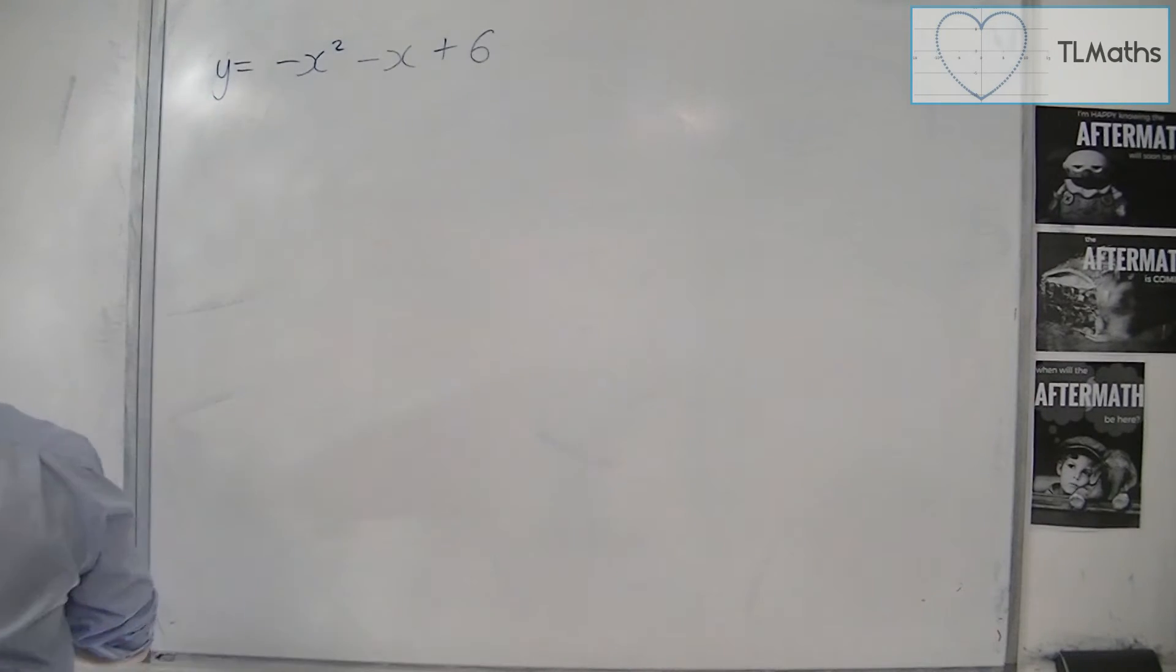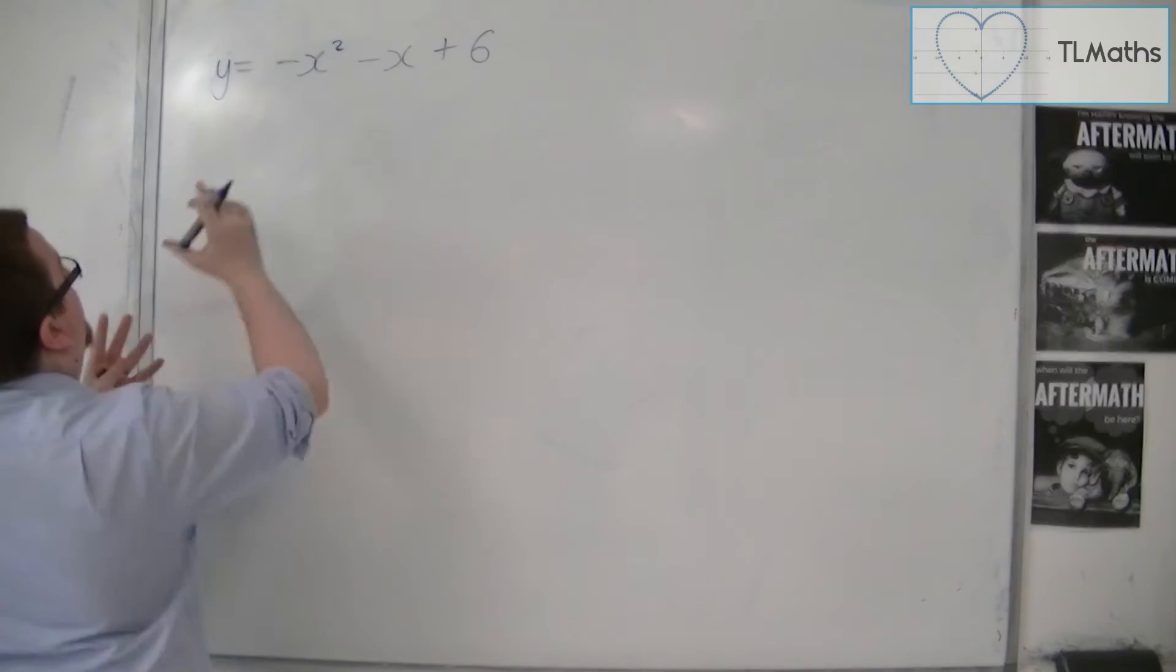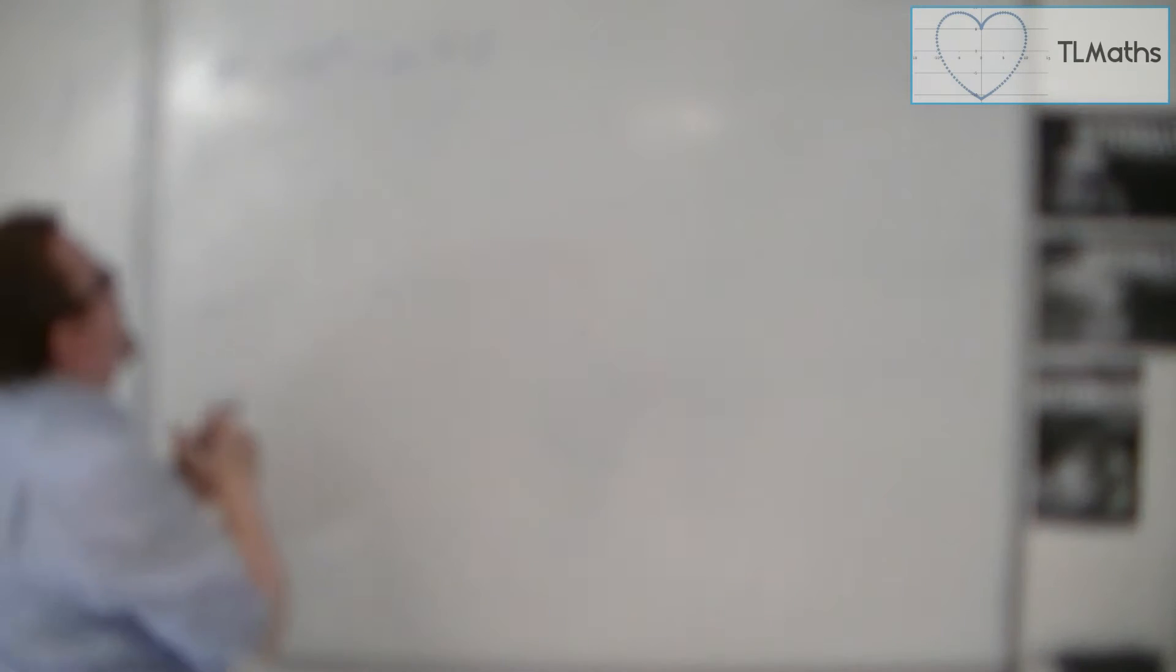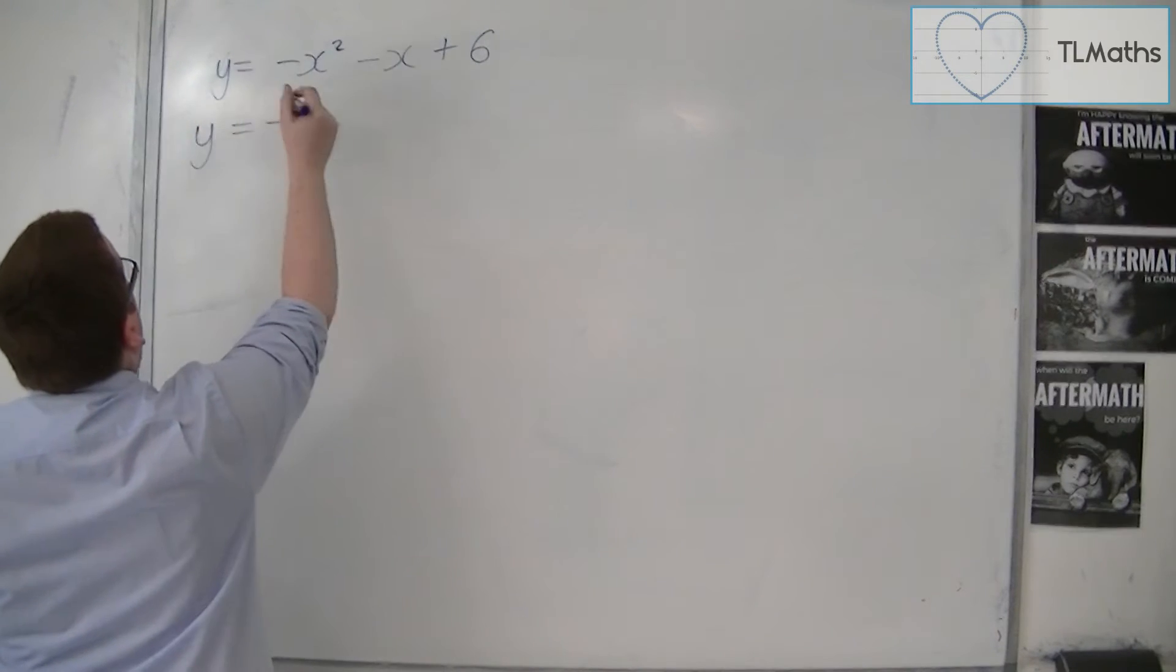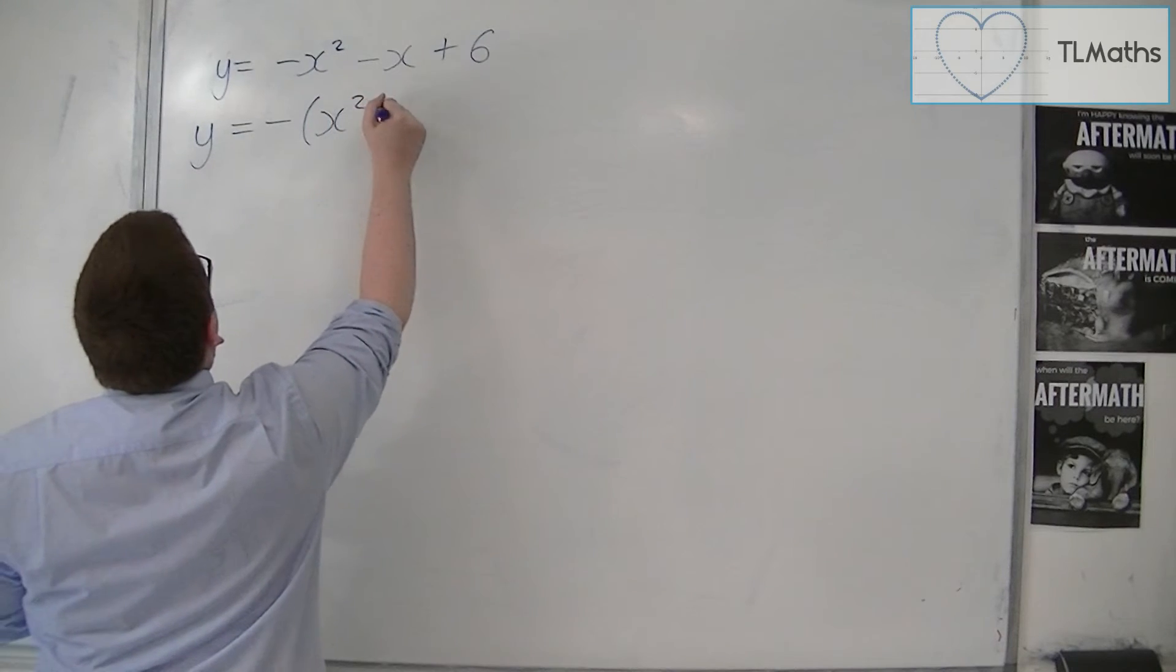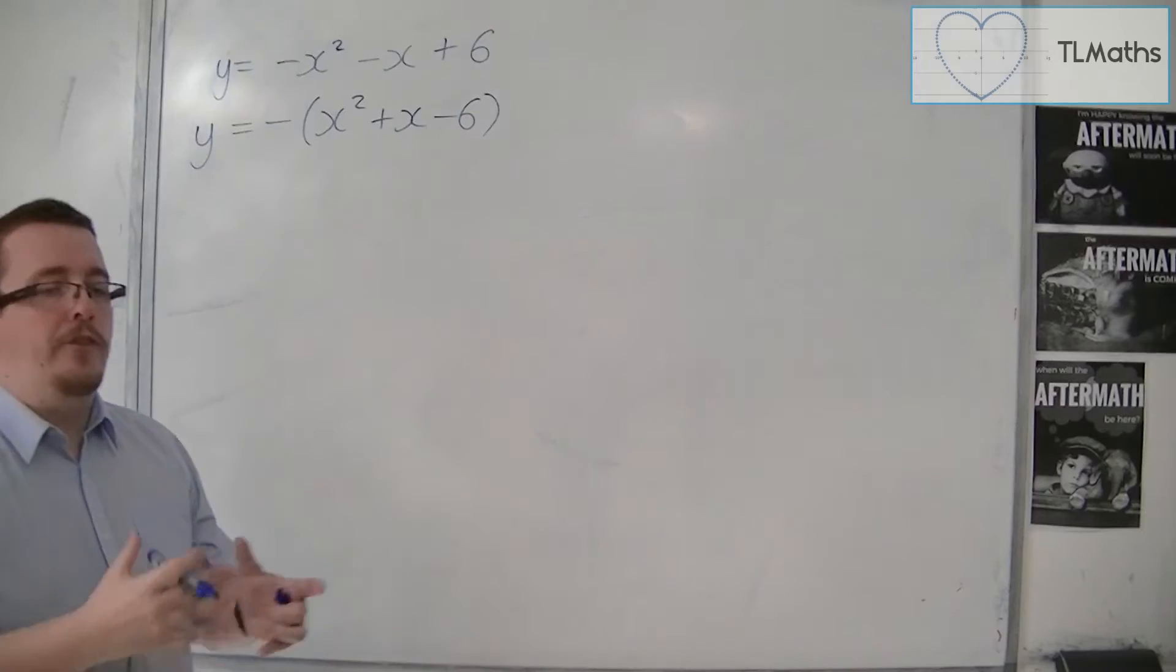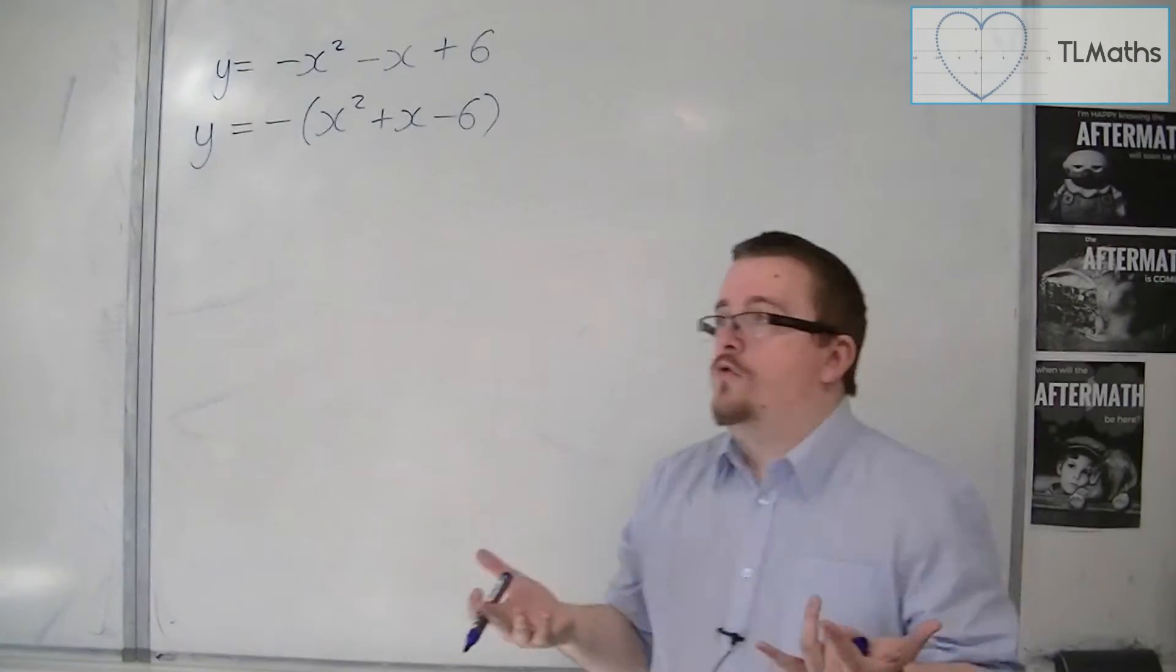So when we go into this problem, we first notice that there is a minus sign on the front. So what you could do to start off with is you can write this as y equals minus x squared plus x minus 6. And it stops you from having to deal with that minus sign when you factorise it.